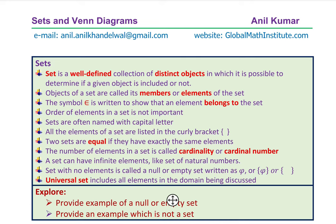Sets are often named with a capital letter, and all elements of a set are listed in curly brackets. Two sets are equal if they have exactly the same elements. The number of elements in a set is called cardinality or cardinal number. A set can have infinite elements, like a set of natural numbers. A set with no elements is called a null or empty set, written with the Greek letter phi or as empty curly brackets. The universal set includes all elements in the domain being discussed.